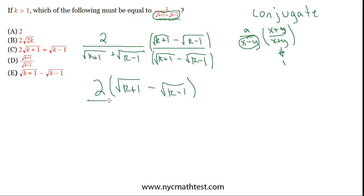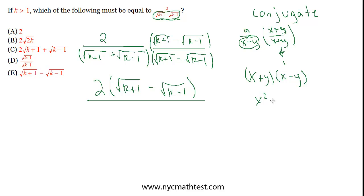In the denominator we have the product of two binomials, so we need to FOIL. But the beauty of the conjugate is that the middle terms cancel out. Going back to the example of x plus y times x minus y: you get x squared plus xy minus xy minus y squared. The middle terms, plus xy minus xy, cancel out — this always happens when multiplying by the conjugate, which is why we use it. You end up with x squared minus y squared, which is much cleaner.